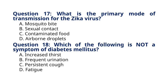Question 18: Which of the following is not a symptom of diabetes mellitus? A. Increased thirst, B. Frequent urination, C. Persistent cough, D. Fatigue. The correct answer is option C, Persistent cough. Explanation: While diabetes mellitus can lead to various symptoms such as increased thirst, frequent urination, and fatigue, a persistent cough is not typically associated with this condition.